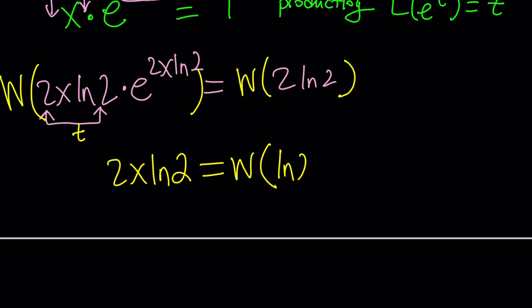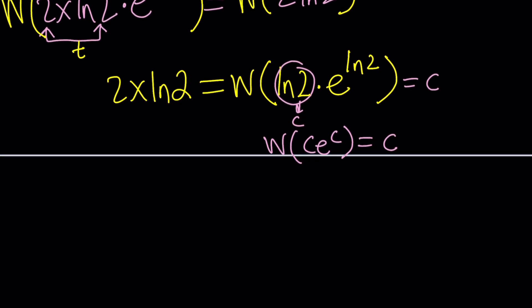So here's what I can do with that. I can write the two as e to the power ln two. So now this becomes, if I call this c, this becomes W of c e to the c, which is c. Do you see what I see? Hopefully you do. So this is c, which is ln two. So you get ln two from here and 2x ln two on the left hand side. Great. ln two cancels out. Beautiful. And now we end up with 2x equals 1 and x equals 1 half.